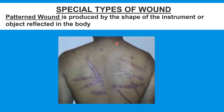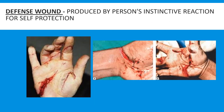There are also special types of wounds. The pattern wound is produced by the shape of the instrument or object reflected in the body. The defense wound is produced by the person's instinctive reaction or self-protection.